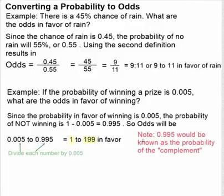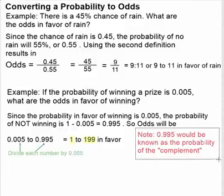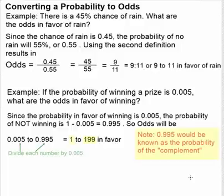Note: 0.995 would be known as the probability of the complement. You get the complement by subtracting the probability from 1.